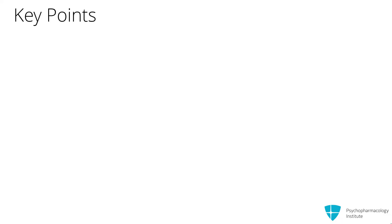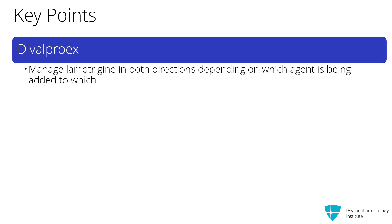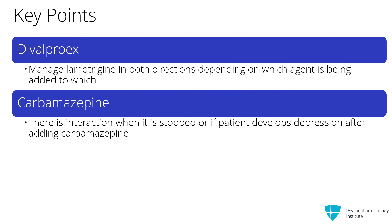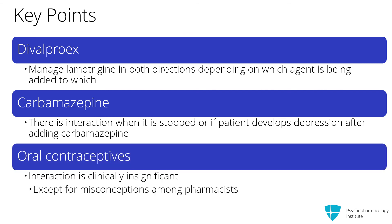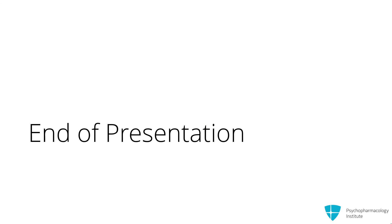To review clinically relevant drug interactions: with divalproex, be careful — you must manage lamotrigine levels in both directions depending on which agent is being added to which. With carbamazepine, less concerning generally, but don't forget the interaction — particularly when carbamazepine is being stopped, or if the patient develops depression after you add carbamazepine, it could be because their lamotrigine level went down. And thirdly, on oral contraceptives, lamotrigine's interaction is clinically insignificant, except for misconceptions amongst pharmacists in my experience.